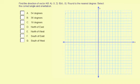Find the direction of vector AB. A is negative 3, 2, and B is 4, negative 3. Round to the nearest degree. Select the correct angle and orientation.